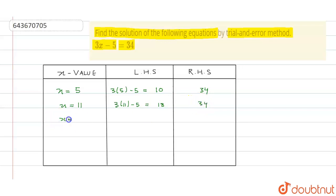Then we need to put the value 12. 3 multiply 12 minus 5 is equal to 31, which is not equals to 34.